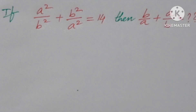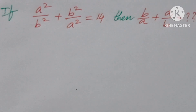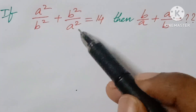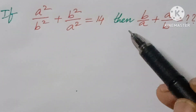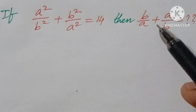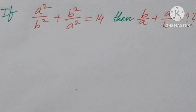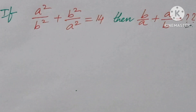Welcome back to IONCGMAX. Today we are looking at one logical question. The question is given: if a² over b² plus b² over a² equals 14, then find the value of b over a plus a over b. So as we are going to solve this problem, pause the video for 10 seconds and try it on.